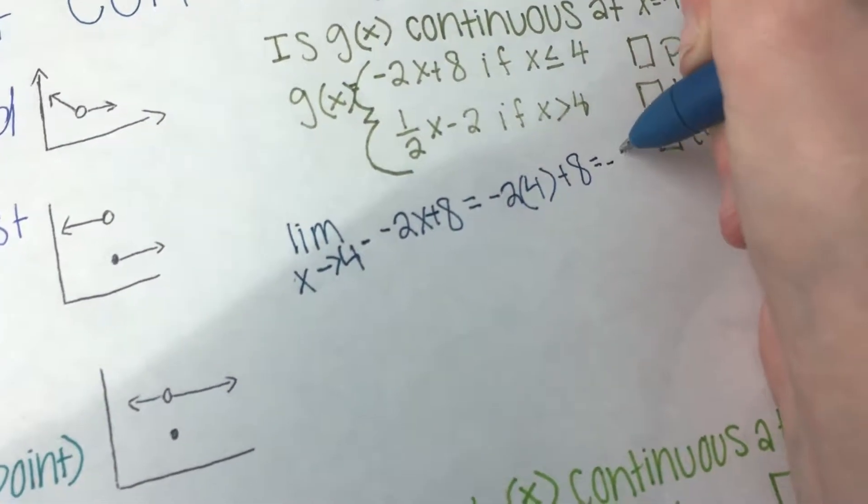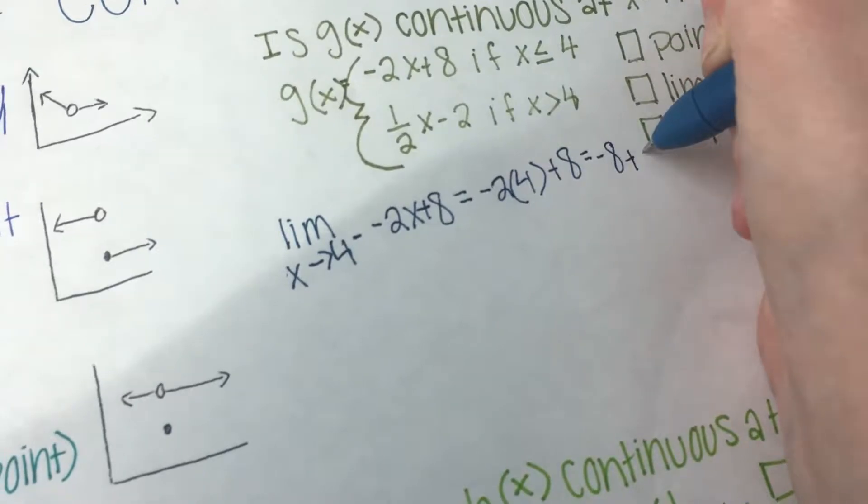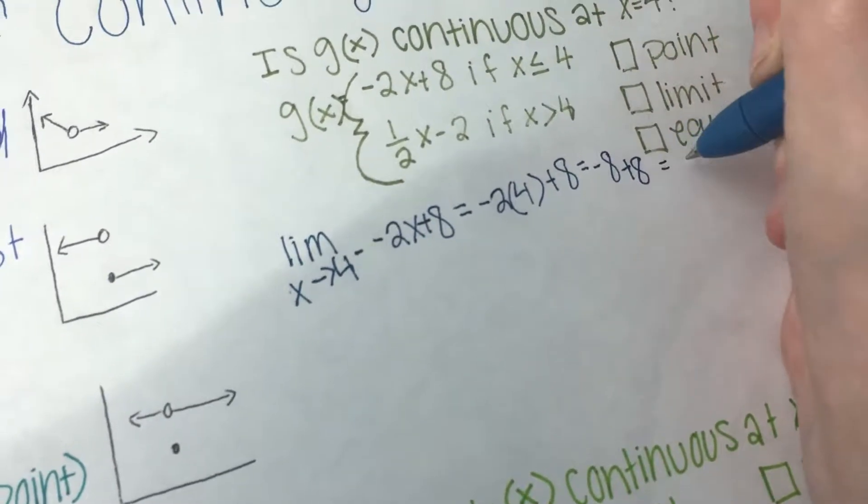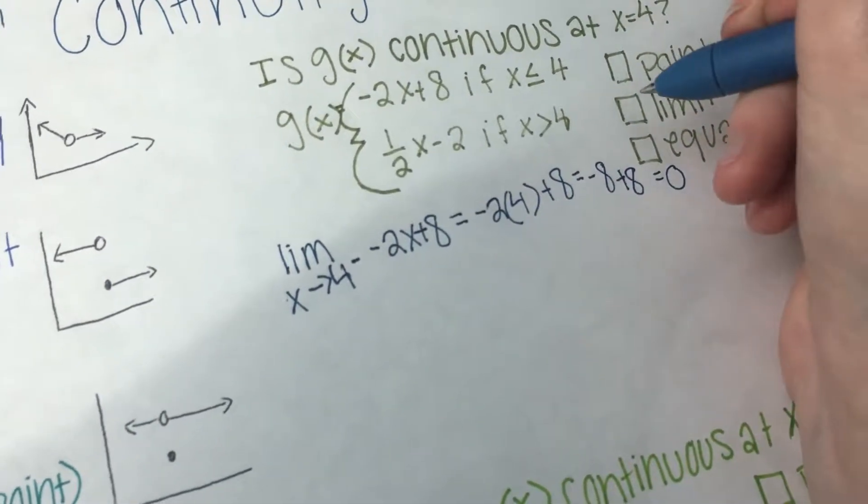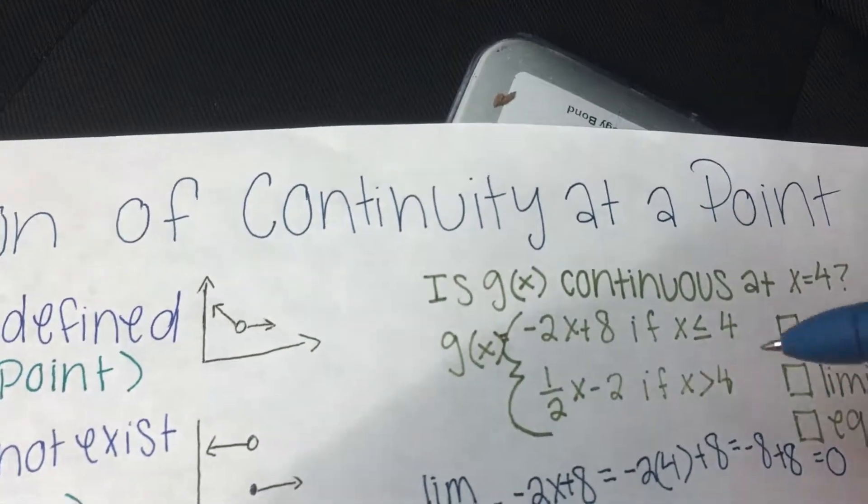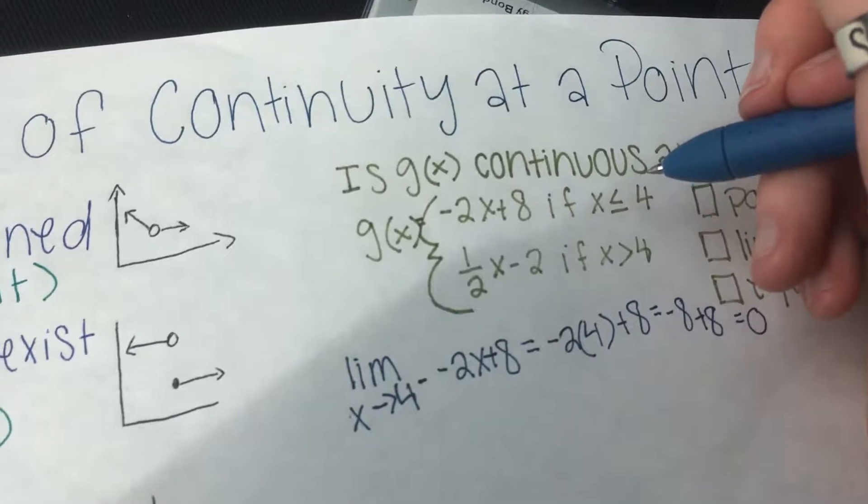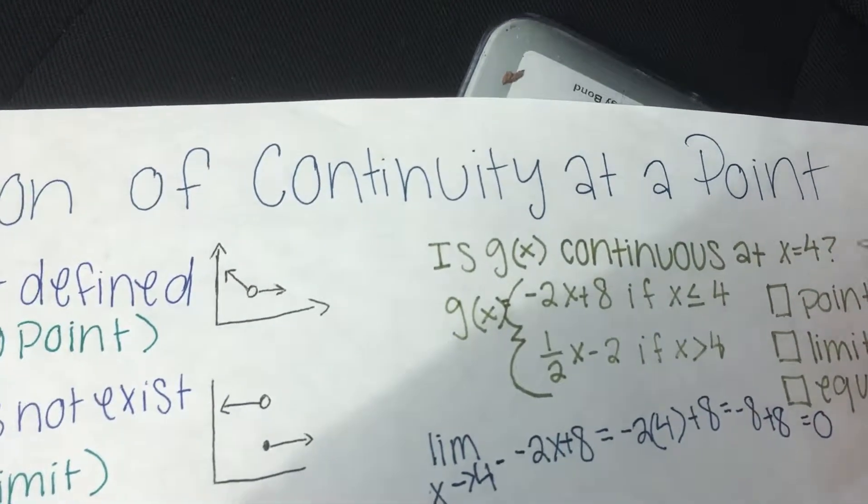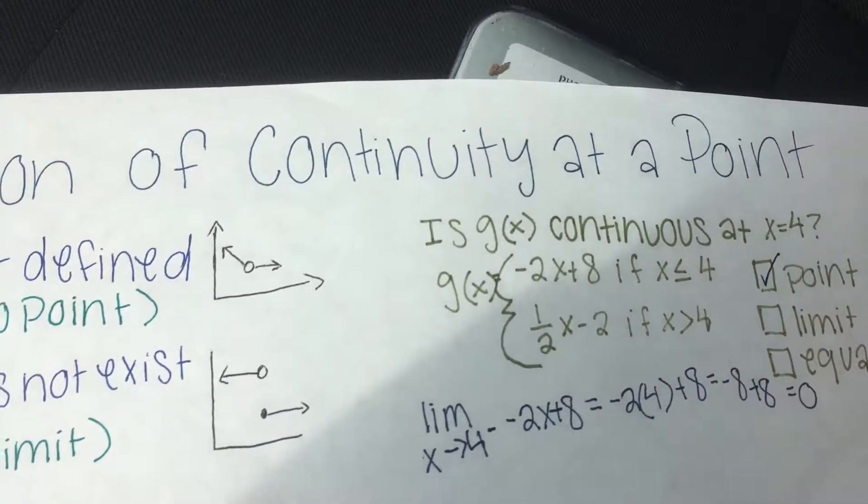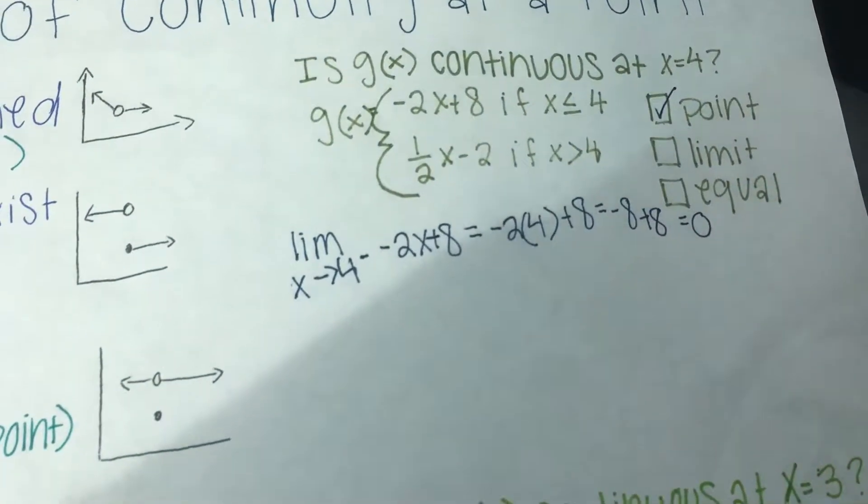Which is equal to negative 8 plus 8, which equals 0. So we know there is a point because x is equal to or less than. So then we have a point.